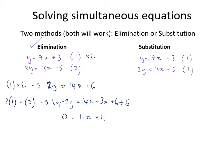Tidying up: 0 = 11x + 11. Subtracting 11 from both sides gives −11 = 11x, and therefore x = −1.